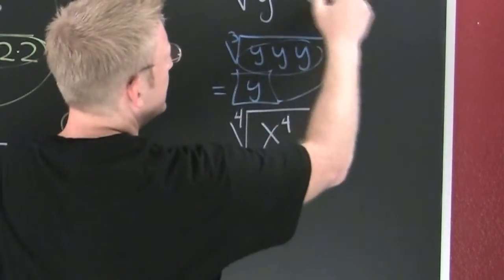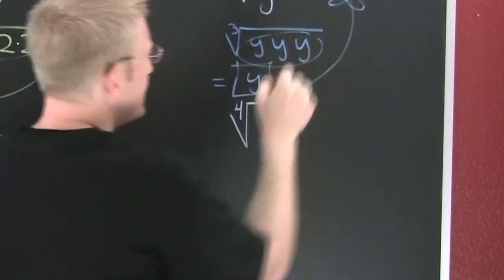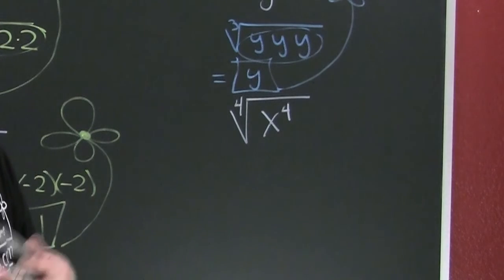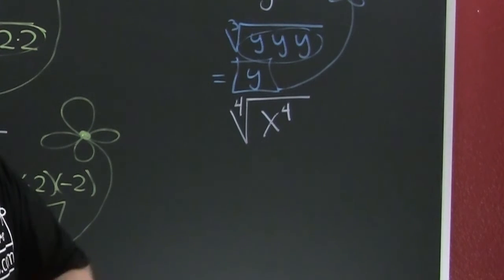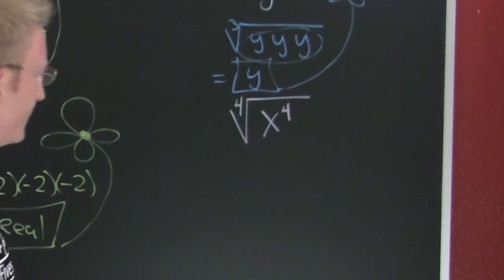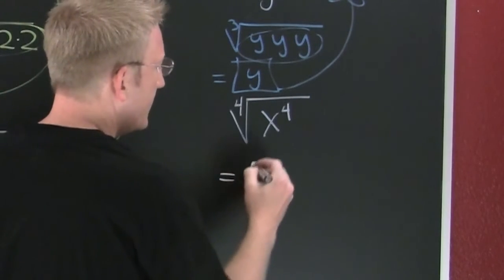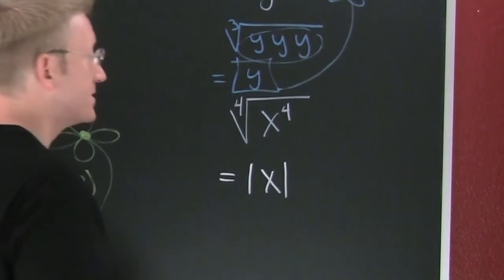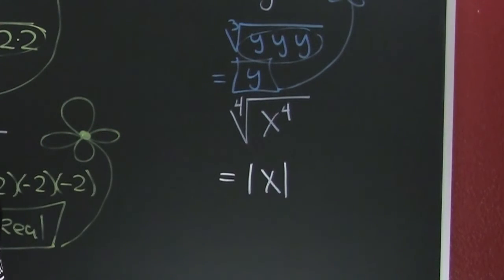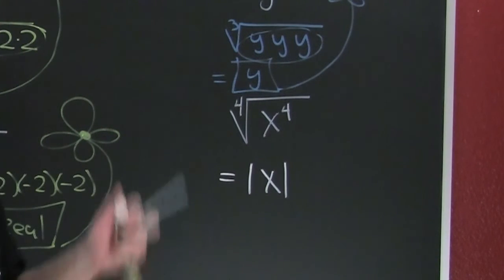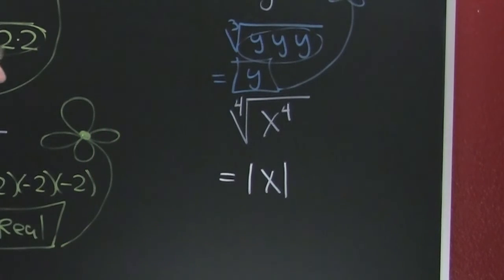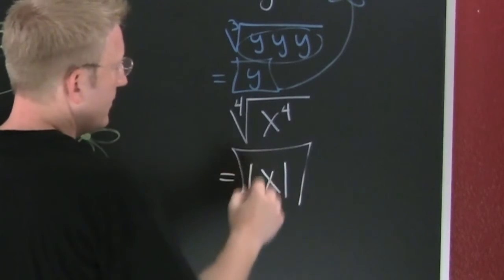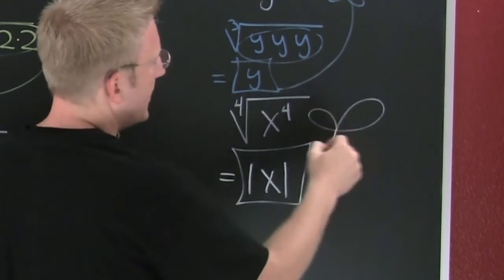Down here we have the fourth root of x to the fourth power. That equals the absolute value of x. Check out the explaining absolute value video if you have time.